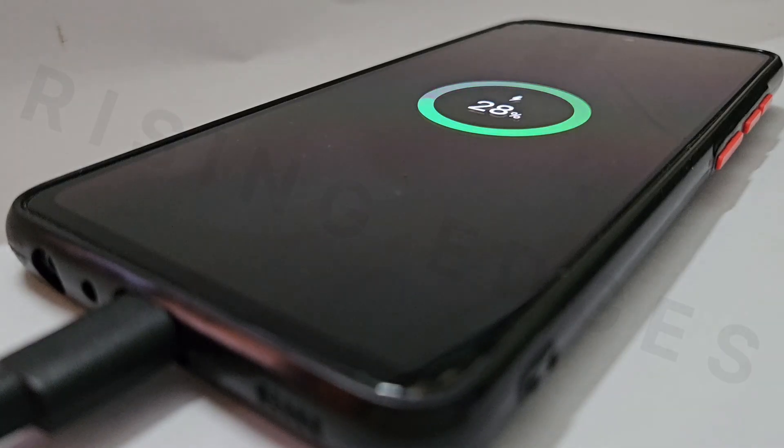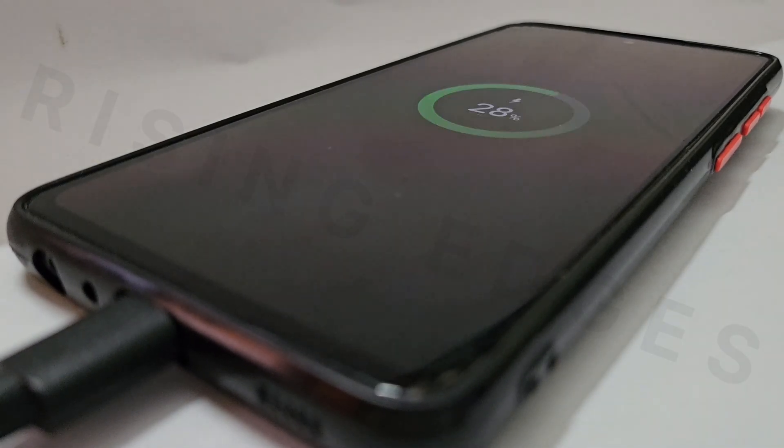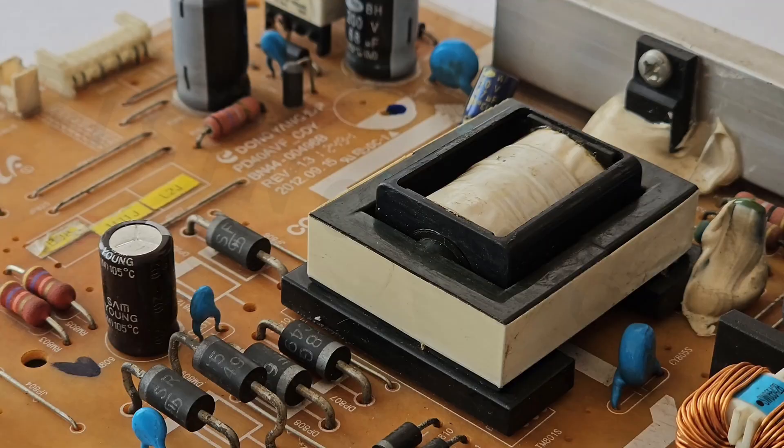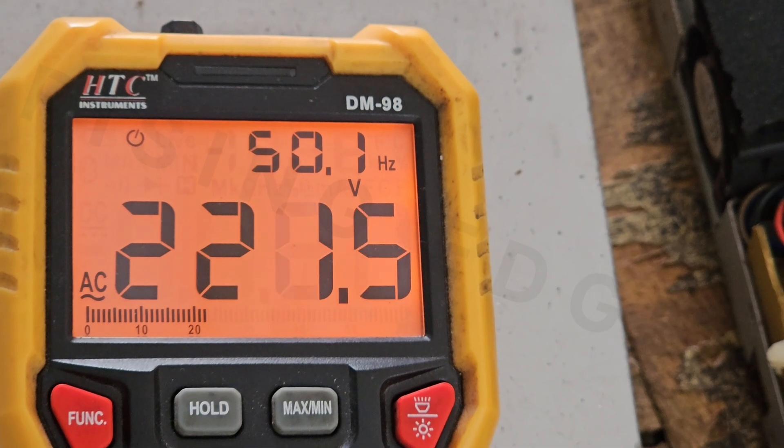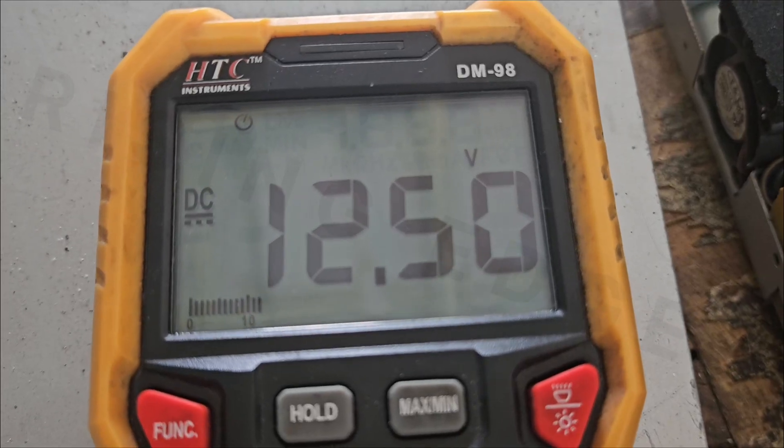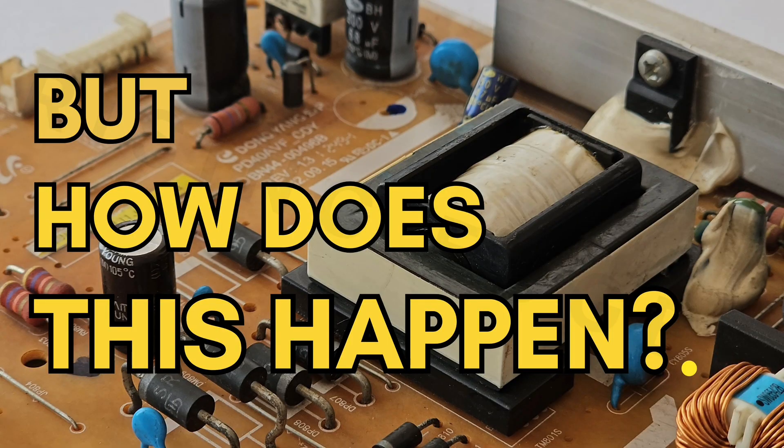When you flip that switch and your phone starts charging, that's not magic, it's power conversion at work. If you open up any electronic device, you will find a power supply module that converts 220V 50Hz AC into a lower DC voltage like 12V or 5V. But how does this actually happen?